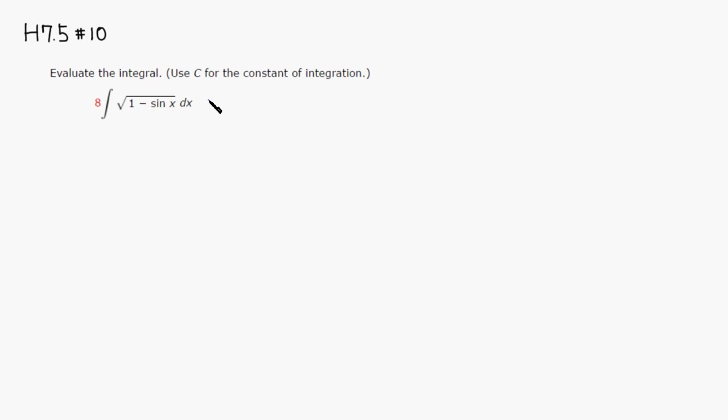First, we're going to do a little bit of manipulation here. So we take square root of 1 minus sine of x. I'm going to multiply top and bottom by square root of 1 plus sine of x, so we have to do the same thing to the denominator as well so that we don't change the quantity.